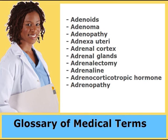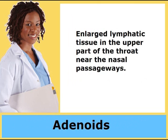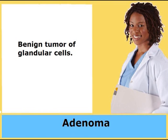Adenoids. Adenoma. Adenopathy. Adnexa uteri. Adrenal cortex. Adrenal glands. Adrenalectomy. Adrenaline. Adrenocorticotropic hormone. Adrenopathy. Adenoids: Enlarged lymphatic tissue in the upper part of the throat near the nasal passageways. Adenoma: Benign tumor of glandular cells.